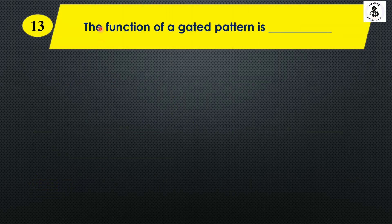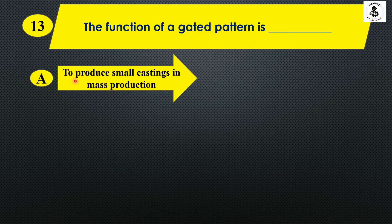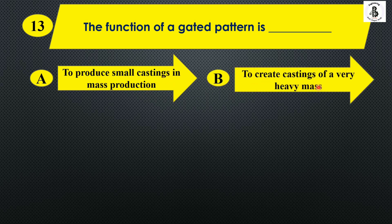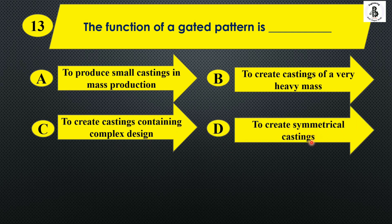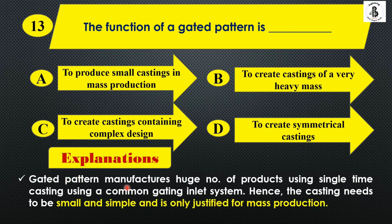The function of a gated pattern is: Option A: to produce small castings in mass production, Option B: to create castings of very heavy mass, Option C: to create castings containing complex designs, and Option D: to create symmetrical castings. A gated pattern manufactures a huge number of products in a single casting using a common gating inlet system. The castings need to be small and simple, and it is only justified for mass production. So the right answer is Option A.